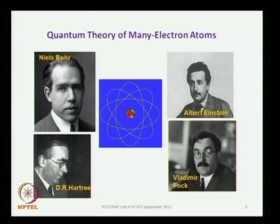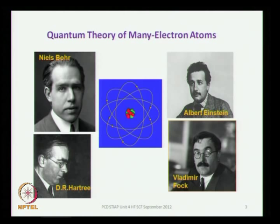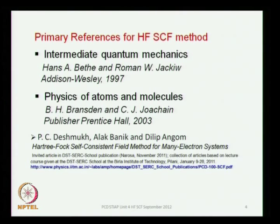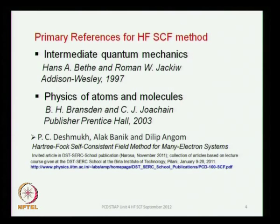We will be extending the quantum mechanics developed by Einstein, Schrödinger, and Heisenberg, and applied to atomic systems by Niels Bohr. When it comes to the many-electron formalism, we will talk about the work of Hartree and Vladimir Fock. I will be using Bethe and Jackiw's intermediate quantum mechanics rather extensively for this unit. I will also use Bransden and Joachain's book Physics of Atoms and Molecules, and there is a small review on the Hartree-Fock method I wrote with two colleagues, uploaded at the course web page.